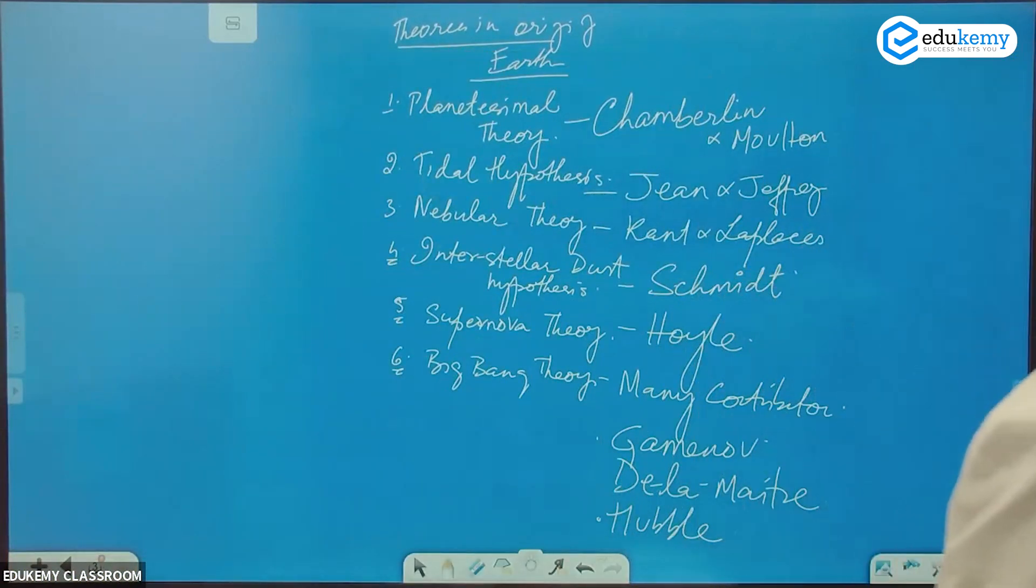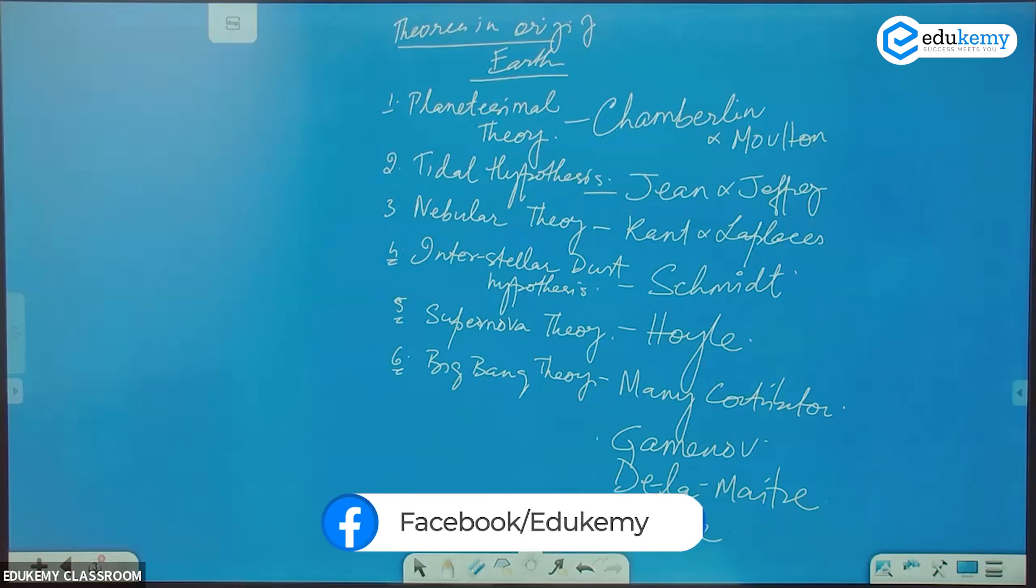It's all covered in the video. I'm just giving a quick summary of what we have done. Planetesimal theory by Chamberlain and Moulton. Tidal Hypothesis by Jeans and Jeffreys. Nebular theory by Kant and Laplace.